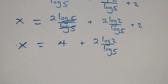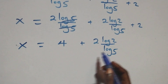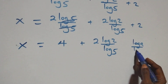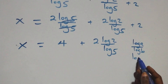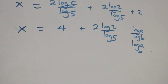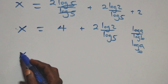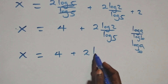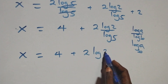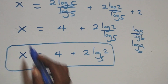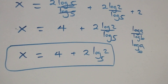We also apply the change of base formula. When we have log a over log b, this is the same thing as log a to base b. Then what we have becomes x equals 4 plus 2 log 2 to base 5. So the value of x equals 4 plus 2 log 2 base 5.